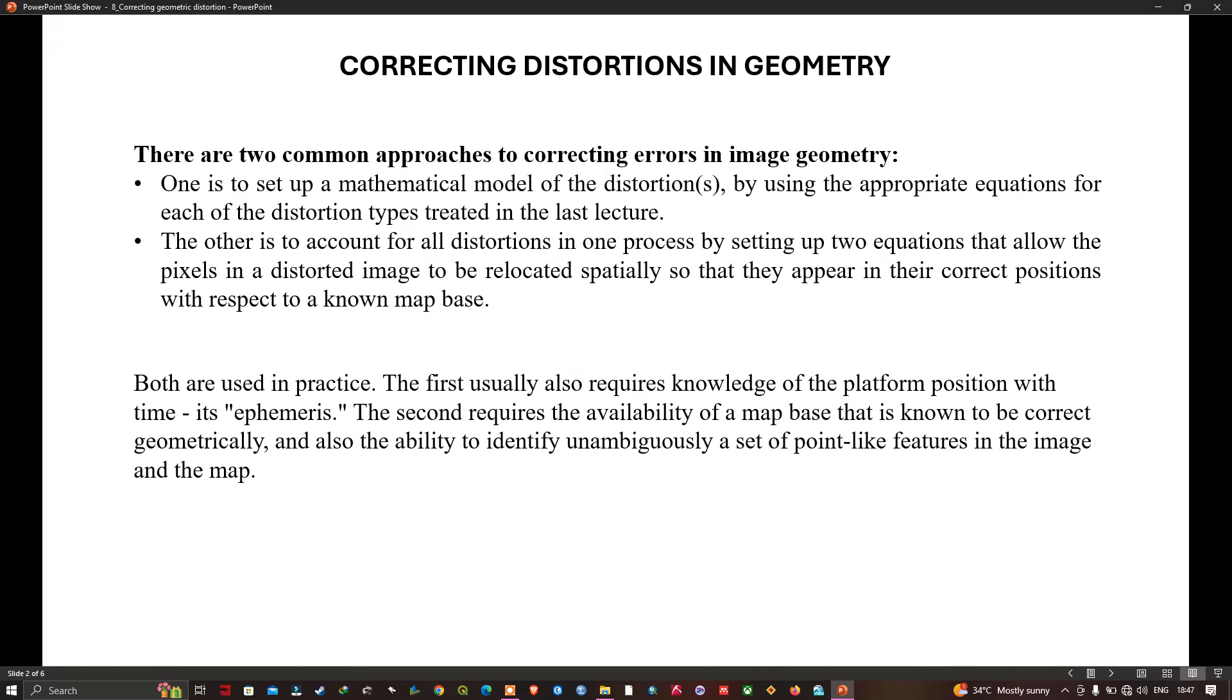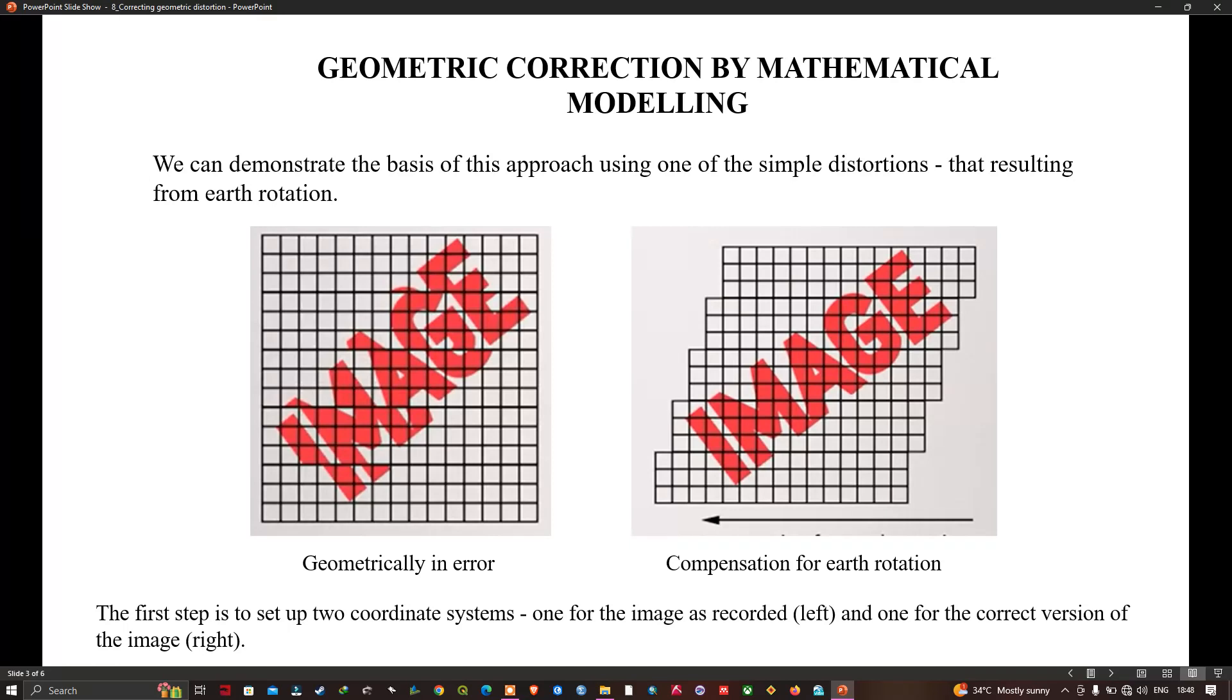We will illustrate the first approach by using the error introduced into an image by the rotation of the earth during image acquisition. This slide shows the image laid down on a regular rectangular grid which is known to be incorrect geometrically, and beside it the version which has been compensated for this rotation.